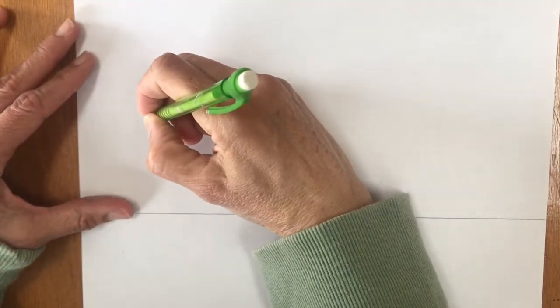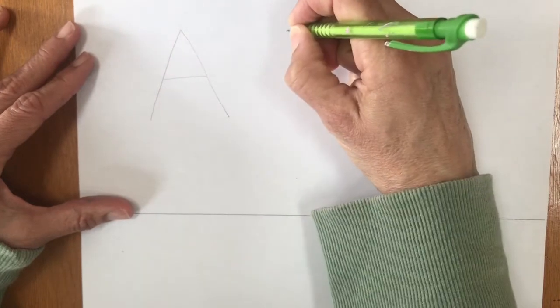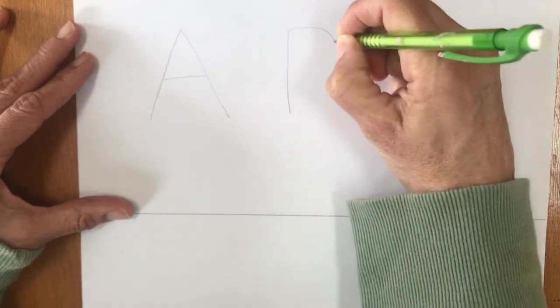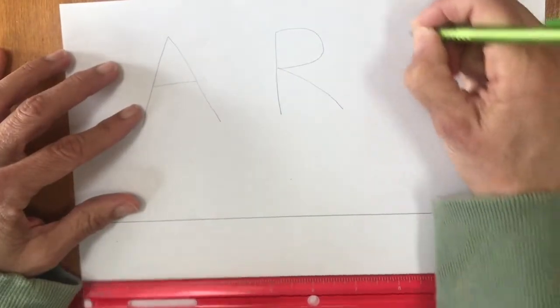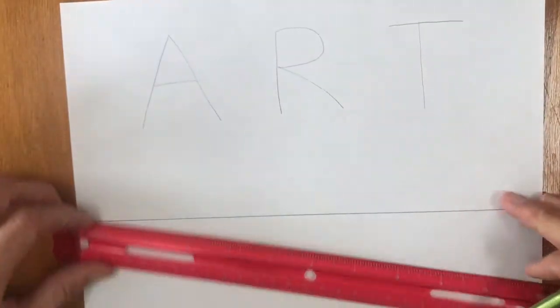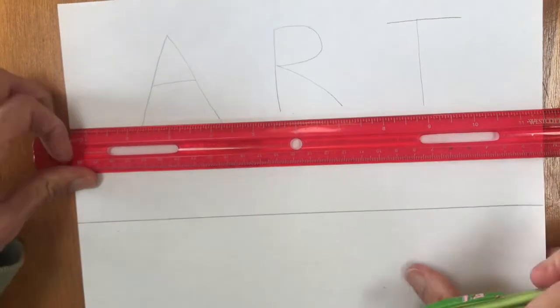So I'm going to start just writing out my A-R-T. As you can see the main things we need for this project are paper, ruler, and pencil. I'm going to try and do them kind of even. Now you could use a ruler if you want and draw a light line so that your letters line up.